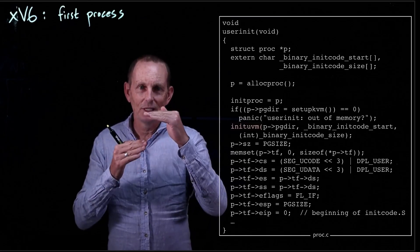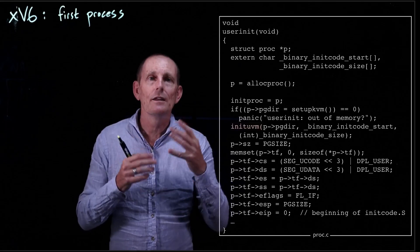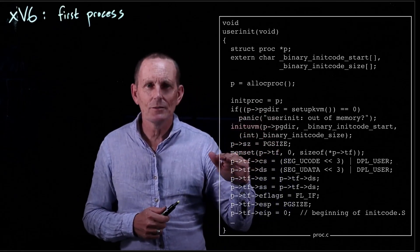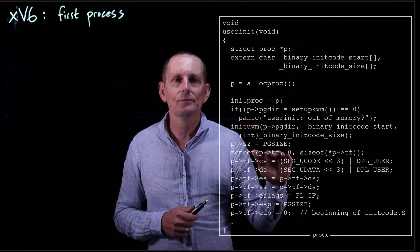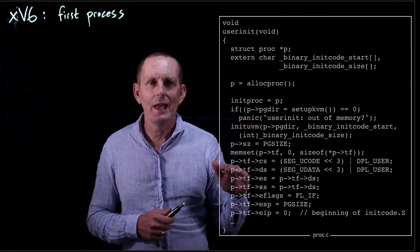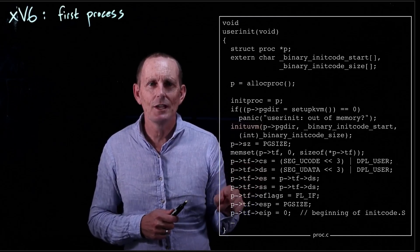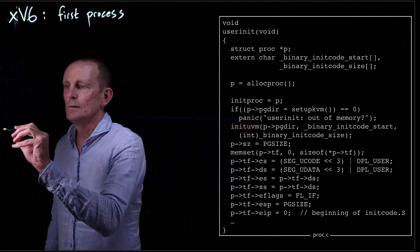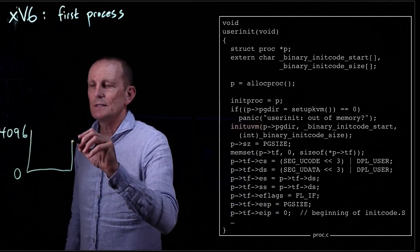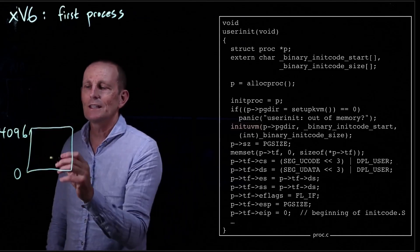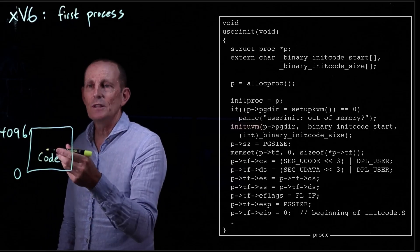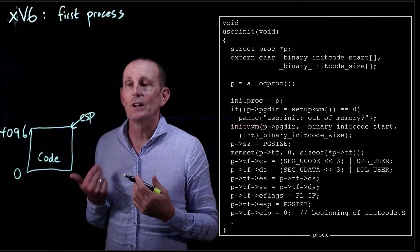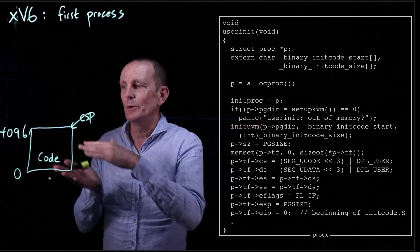The init process has assembly code that calls exec on the real C init process. inituvm is called with the init code, and the size is just one page. We set the CS register, DS, and all segment registers. The stack pointer is set to page size, and the instruction pointer is zero. So the address space runs from 0 to 4096, with code at the bottom and the stack pointer at the top growing downward. It's simple enough that code and stack both fit within 4096 bytes.